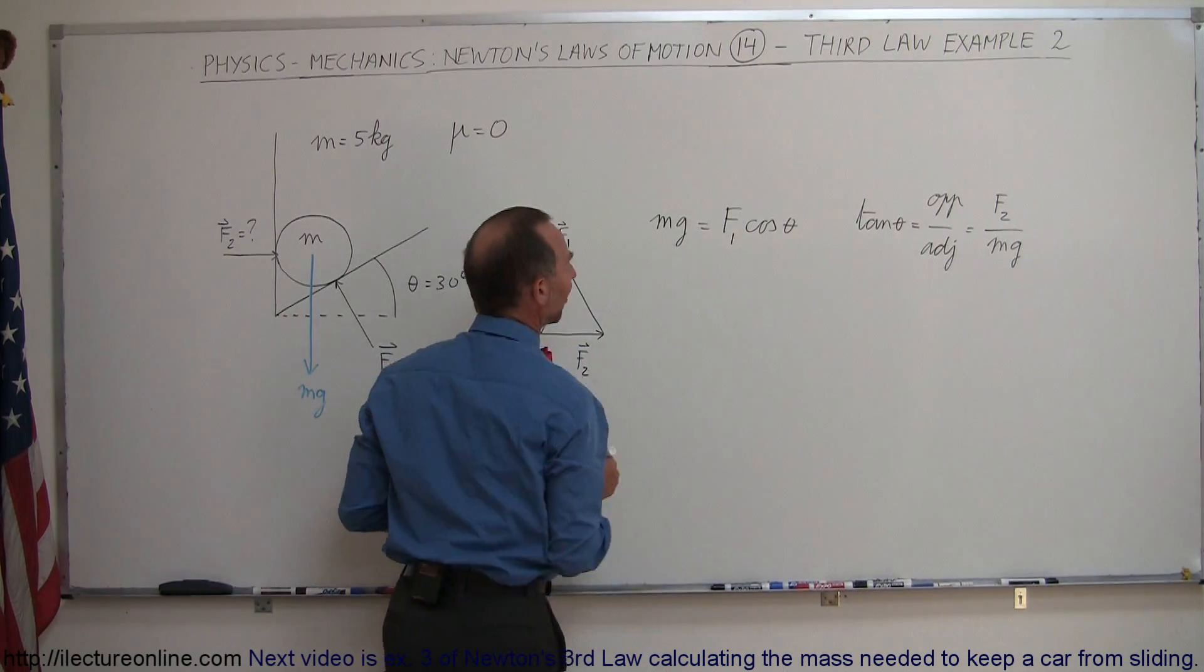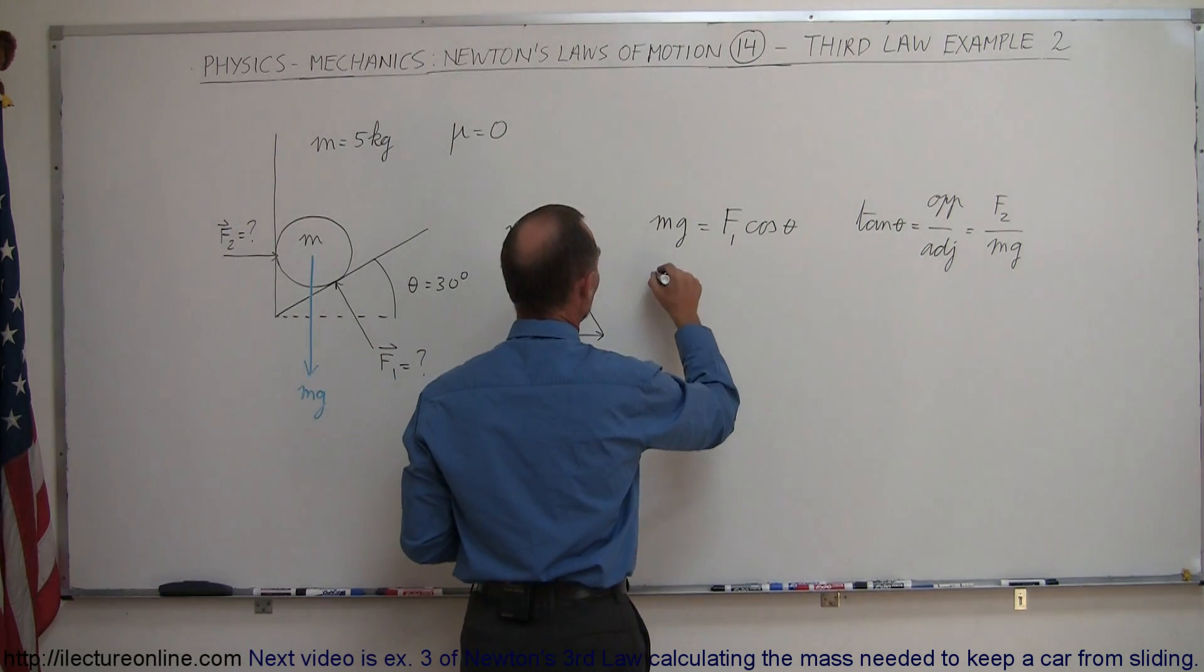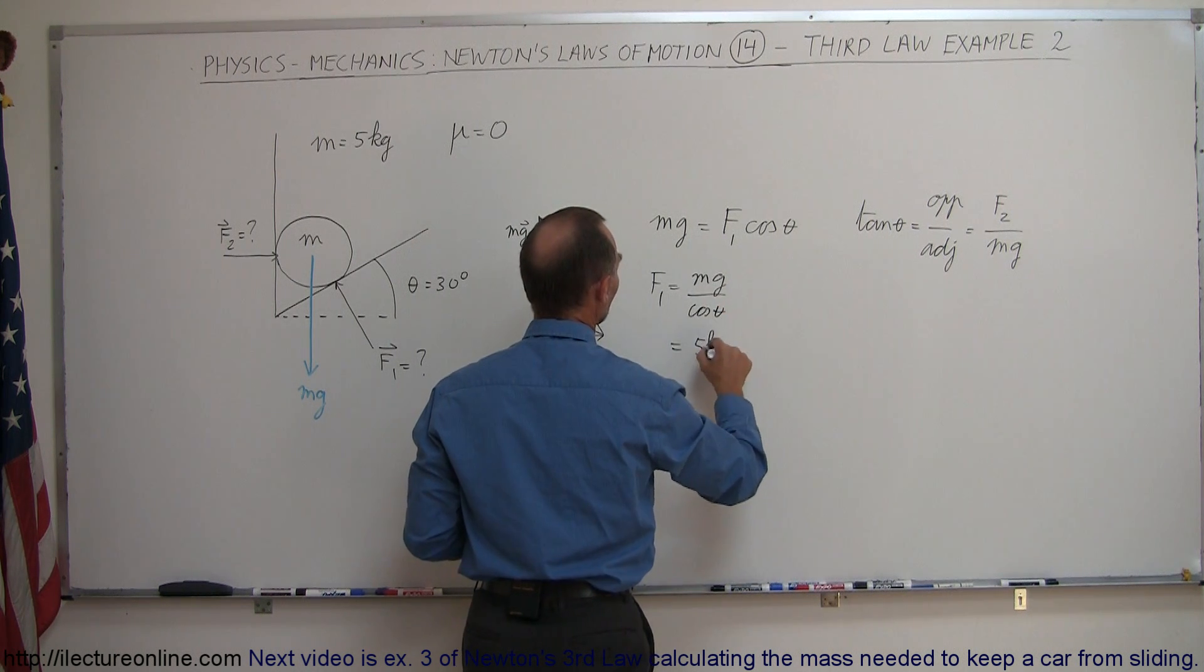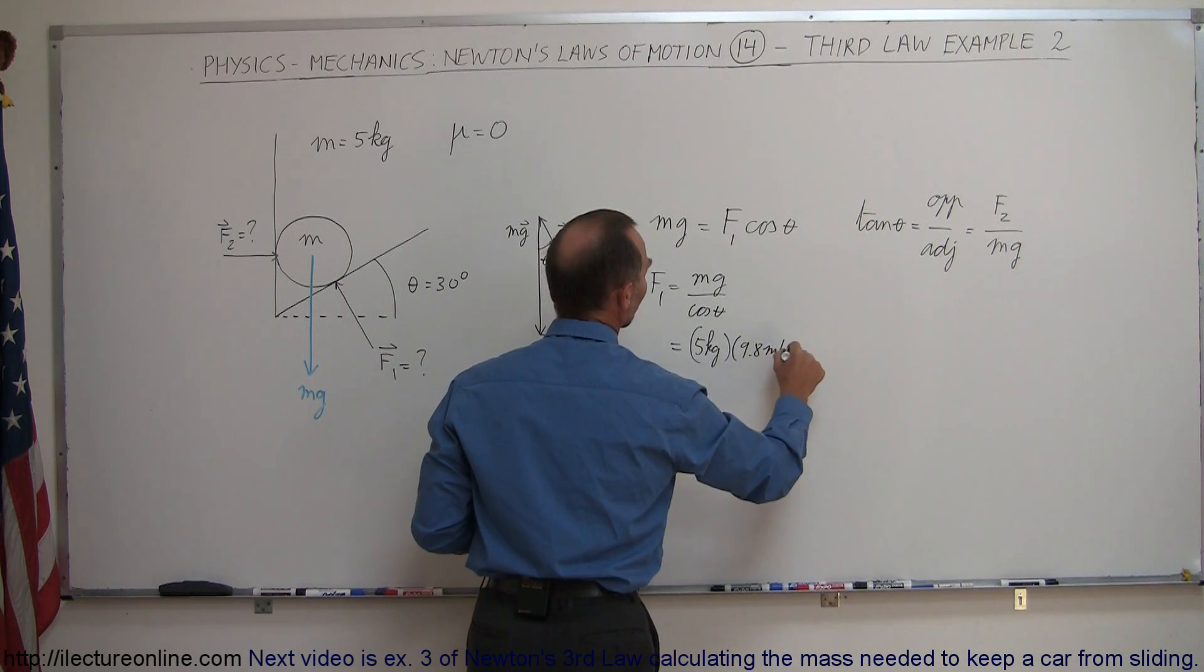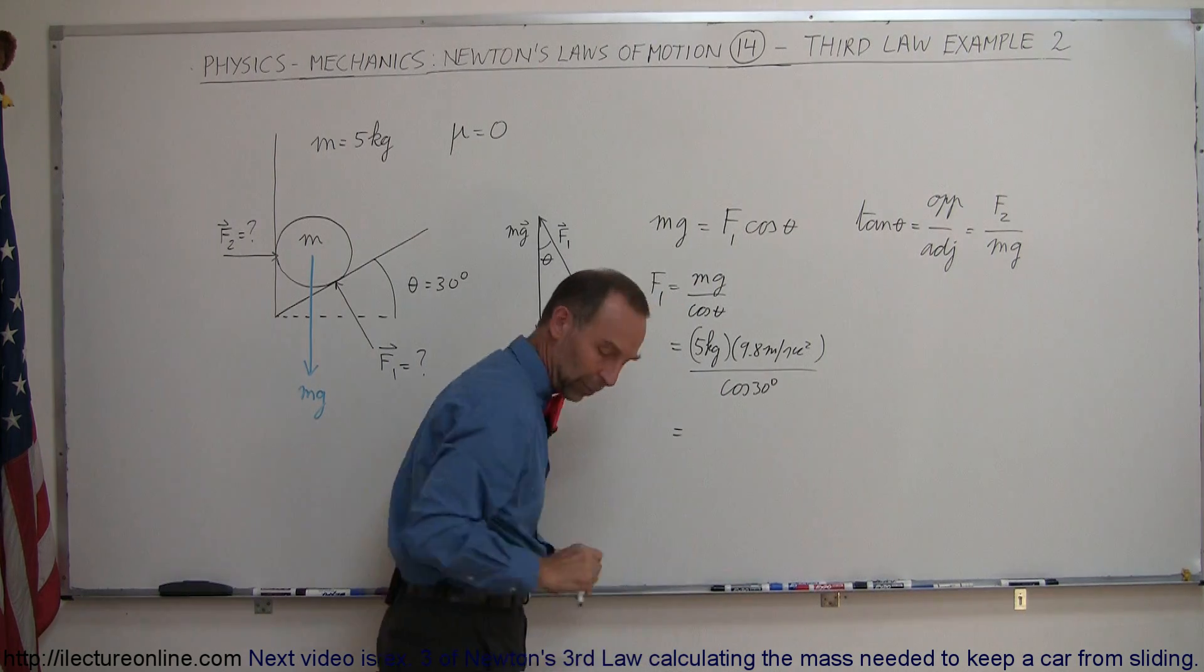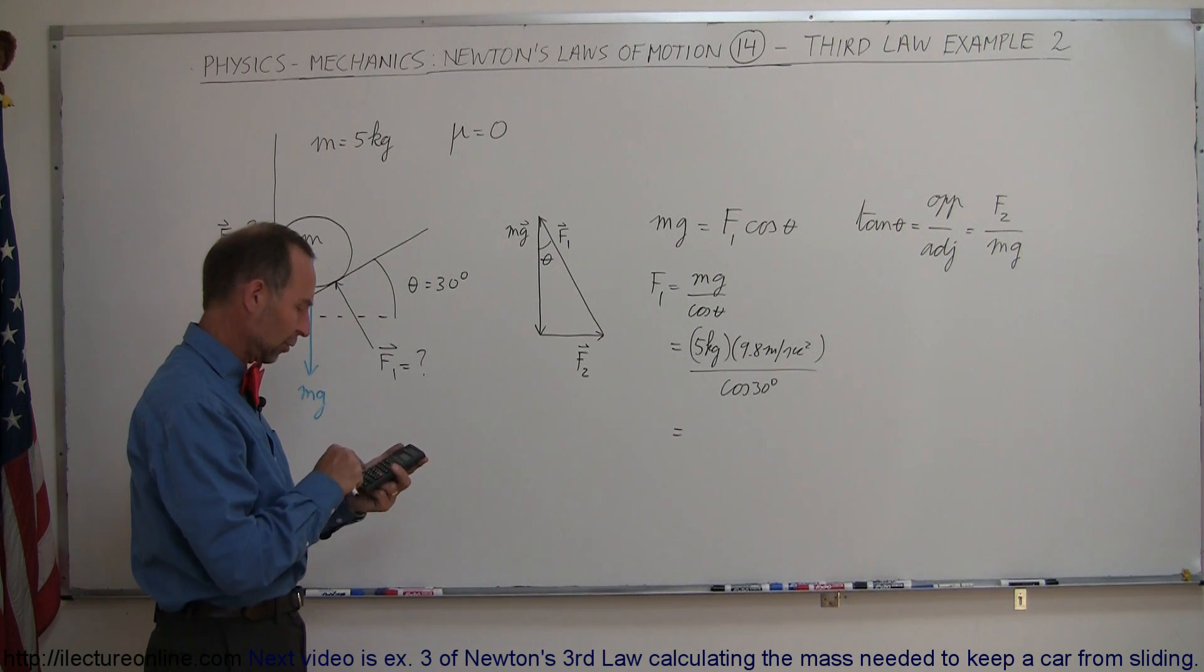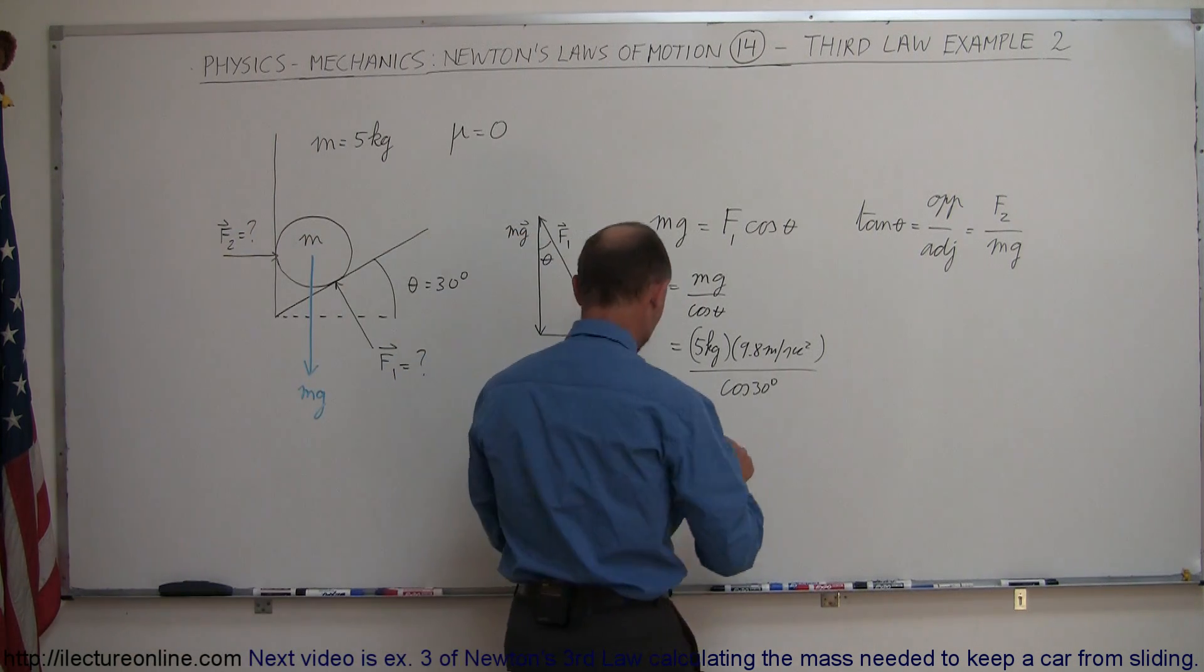Now I should have said F1 right there. Knowing that, we can solve the first equation for F1. F1 equals Mg divided by the cosine of theta. M is 5 kilograms, g is 9.8 meters per second squared, and theta is 30 degrees. This gives us the magnitude of F1: 5 times 9.8 divided by cosine of 30 equals 56.6 Newtons.